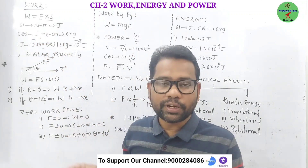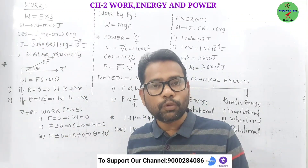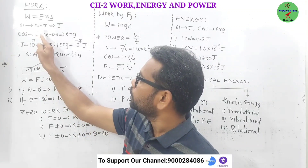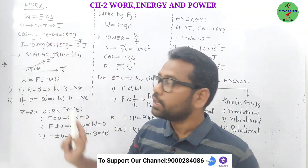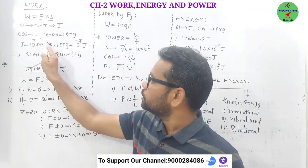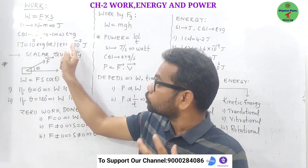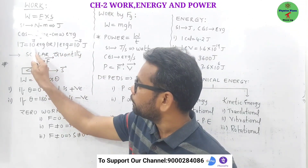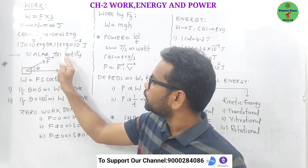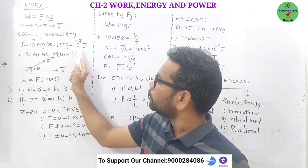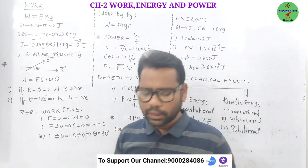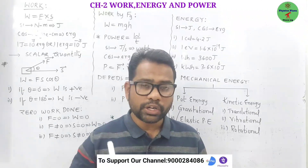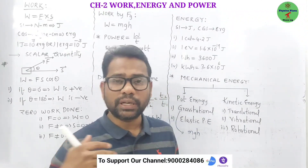Mathematically, work is defined as the product of force and displacement. Its SI unit is the newton-meter, also called the joule. In CGS, the unit is the erg. One joule is equal to 10 power 7 erg, or one erg is equal to 10 power minus 7 joule.